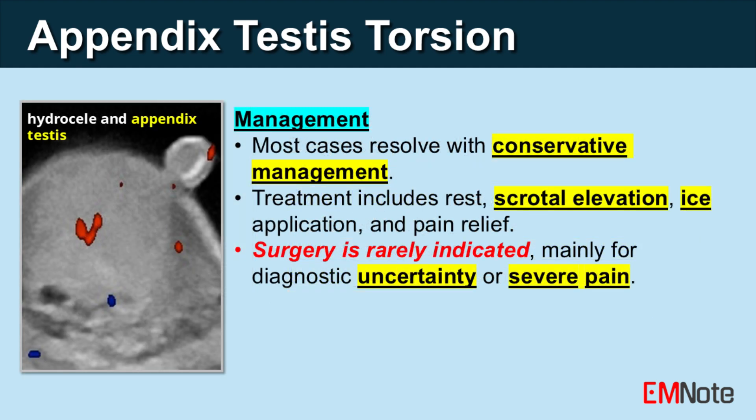Management. Appendix testis torsion is generally a self-limiting condition, and most cases resolve with conservative management. Conservative treatment typically involves bed rest, scrotal elevation, ice application, non-steroidal anti-inflammatory drugs (NSAIDs) for pain and inflammation, and analgesics for pain relief.